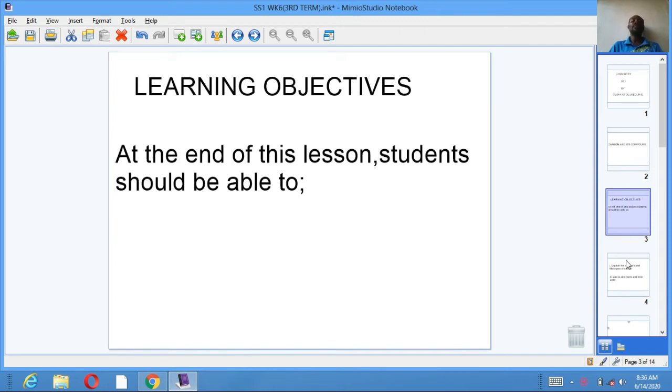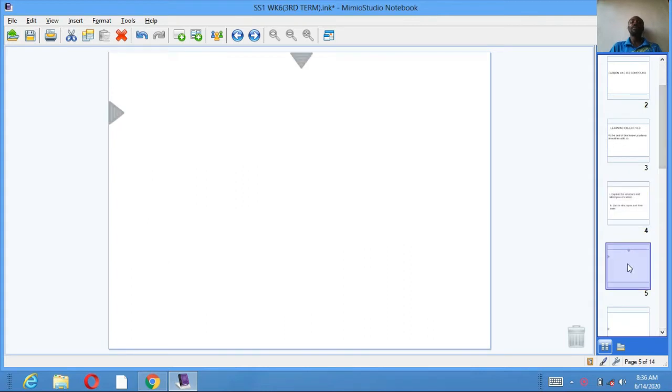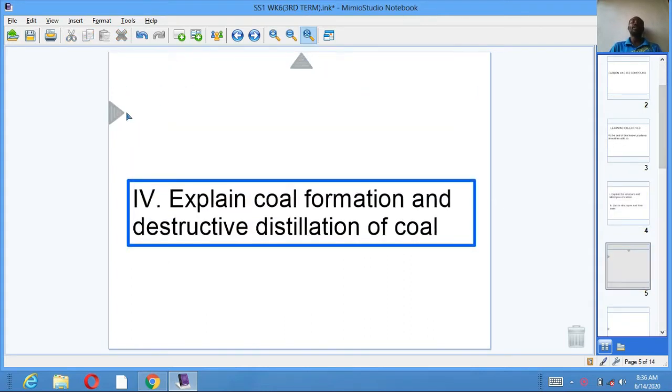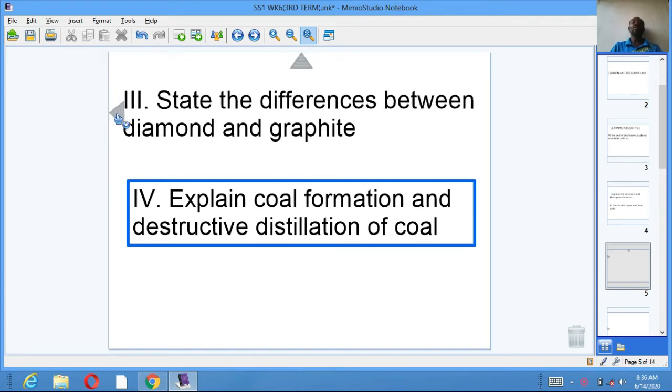At the end of this lesson students should be able to explain the structure and allotropes of carbon, the allotropes and their uses. They should be able to explain the formation and stratification of coal and state the differences between diamond and graphite.